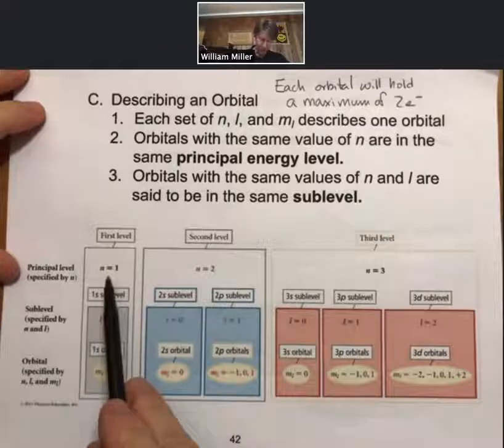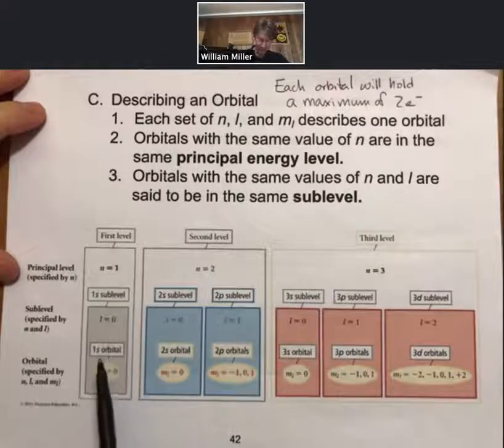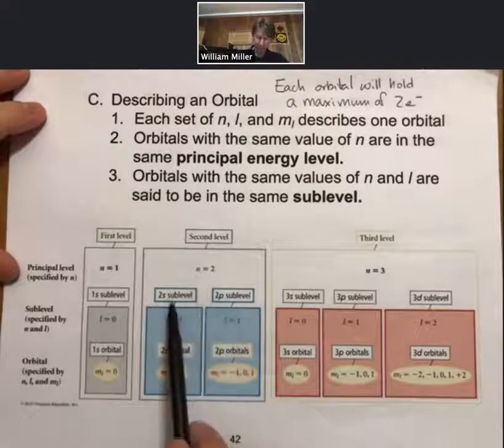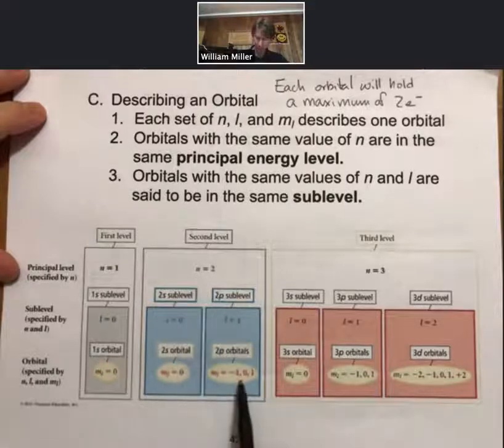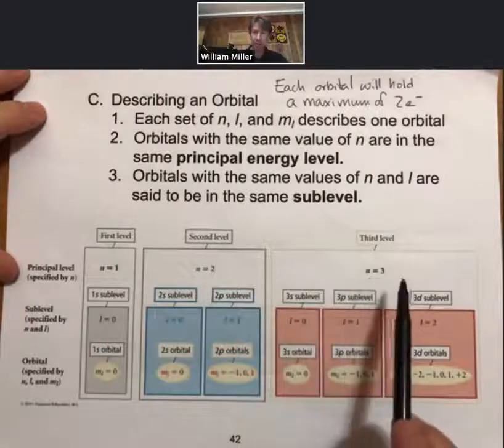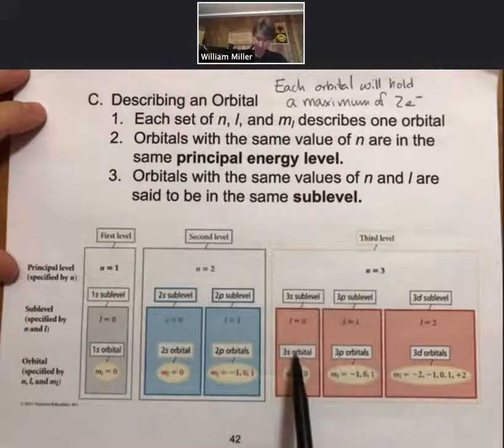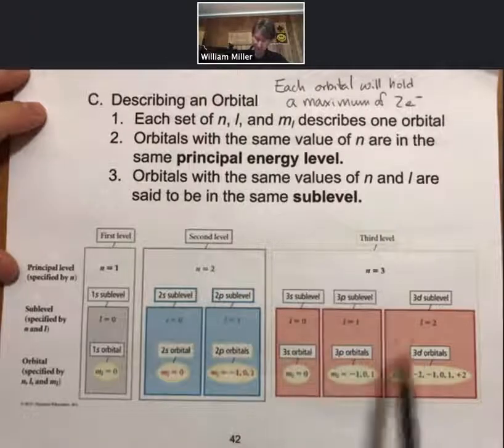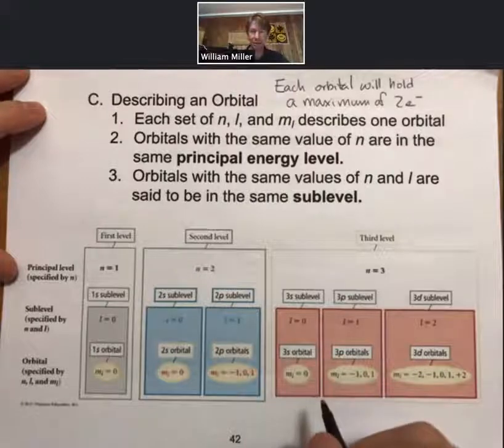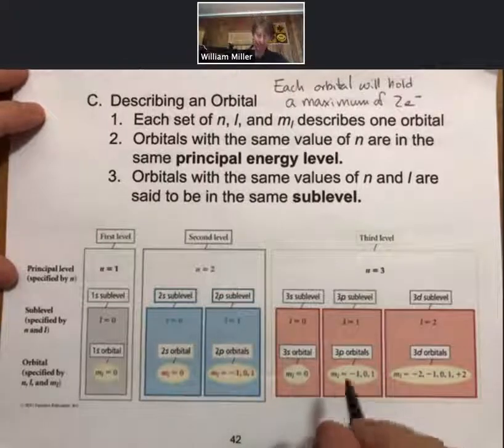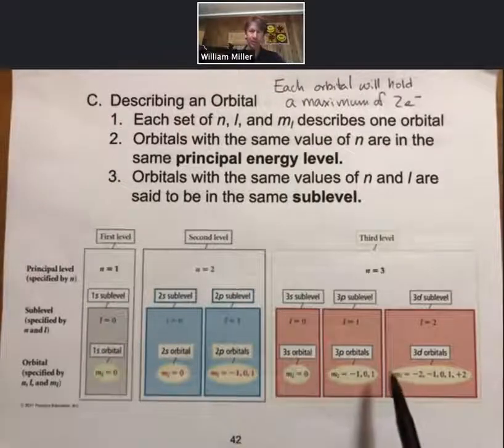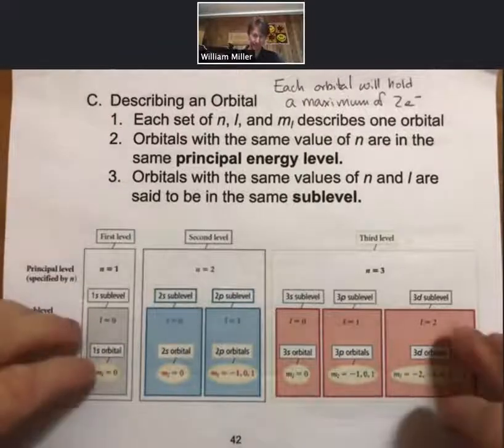So here's n equals 1. We have a 1s sublevel with one orbital. For the second principal energy level, we have 2s and 2p with their orbitals. And with the third level, there's n equals 3 third principal energy level. Then there are three sublevels with one, three, and five orbitals in each. And so this is a nice handy summary of some of the things we've already said with their quantum numbers as well. Okay? All right.